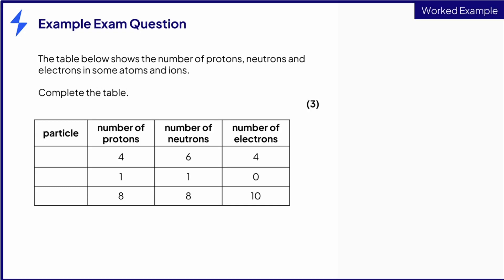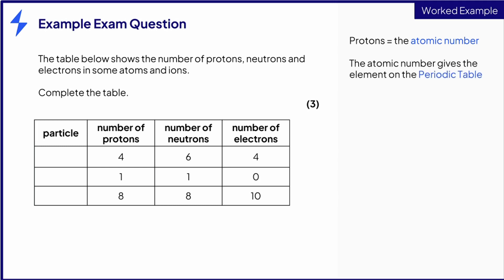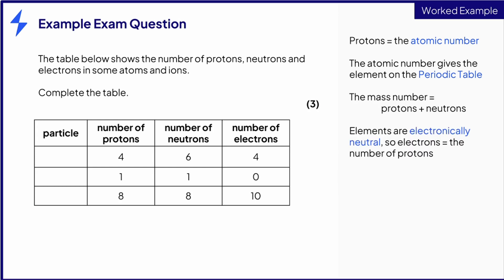For this question, we will work one row at a time. The number of protons gives the atomic number. Therefore, the first row has an atomic number of four. Looking this up on the periodic table gives us the chemical symbol Be for beryllium. The mass number is four plus six, which is ten. Since the number of protons equals the number of electrons, there is no charge. Overall, this gives ⁴₁₀Be for the first mark.